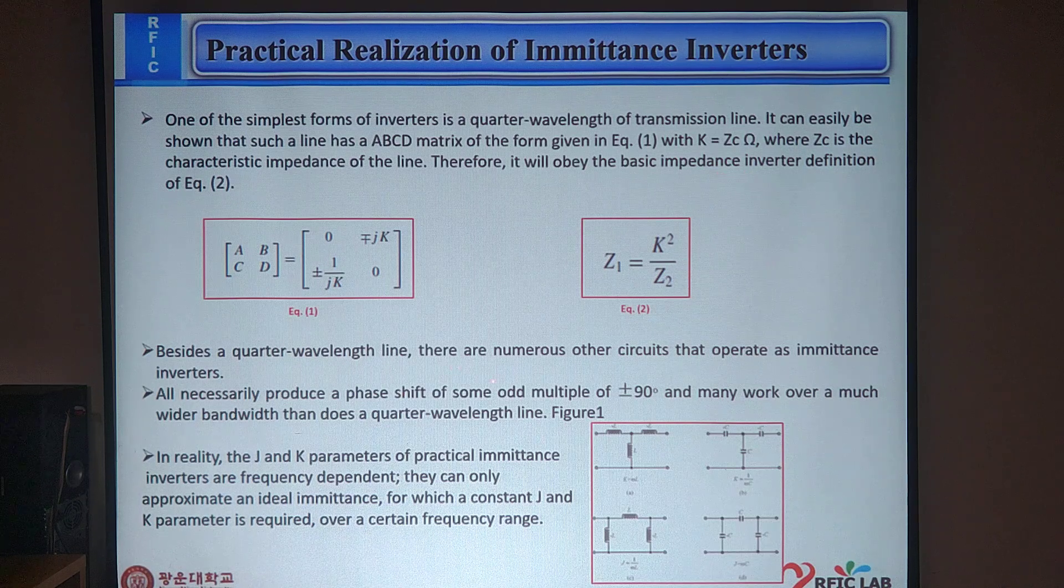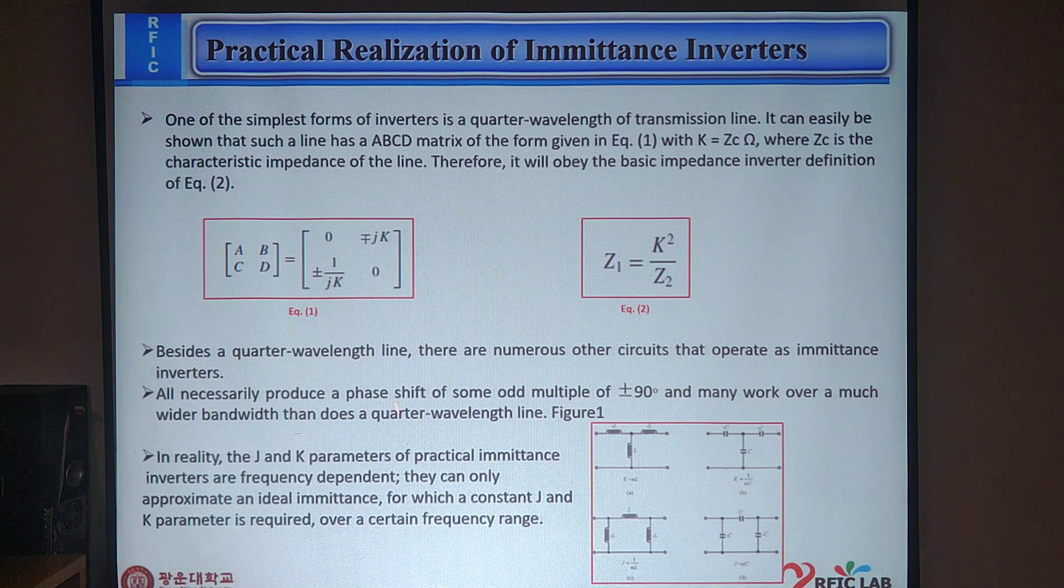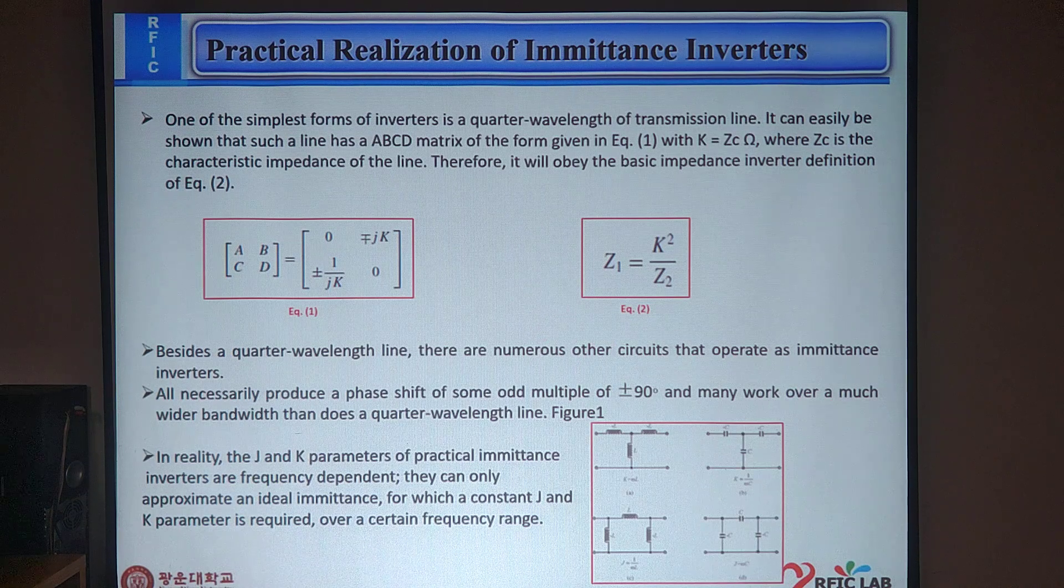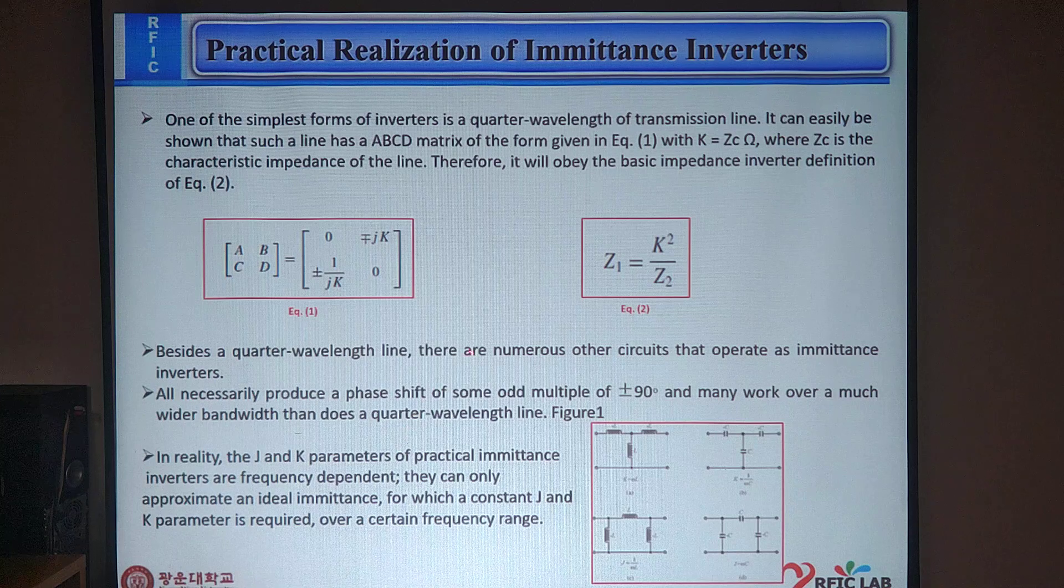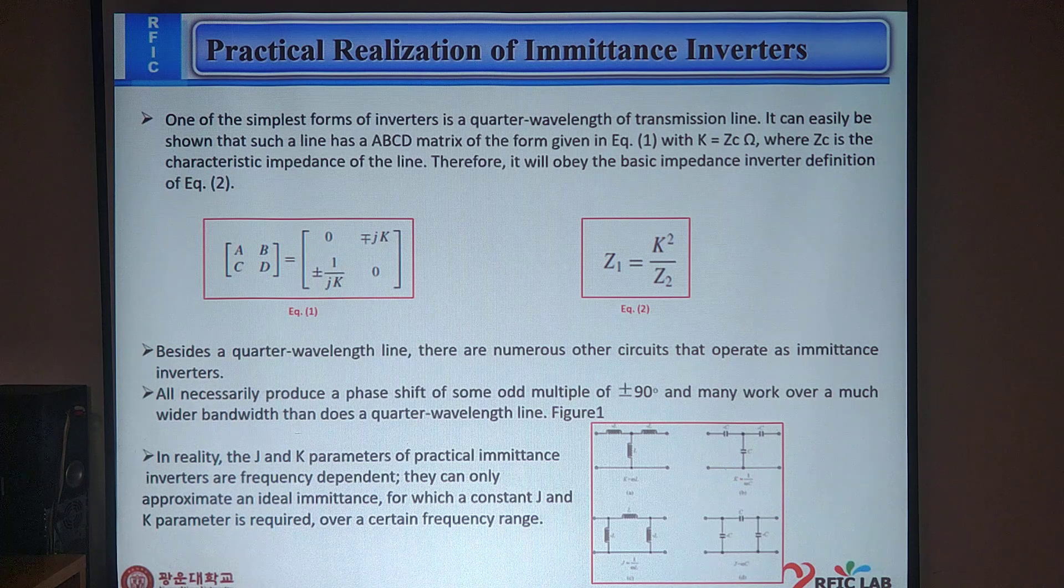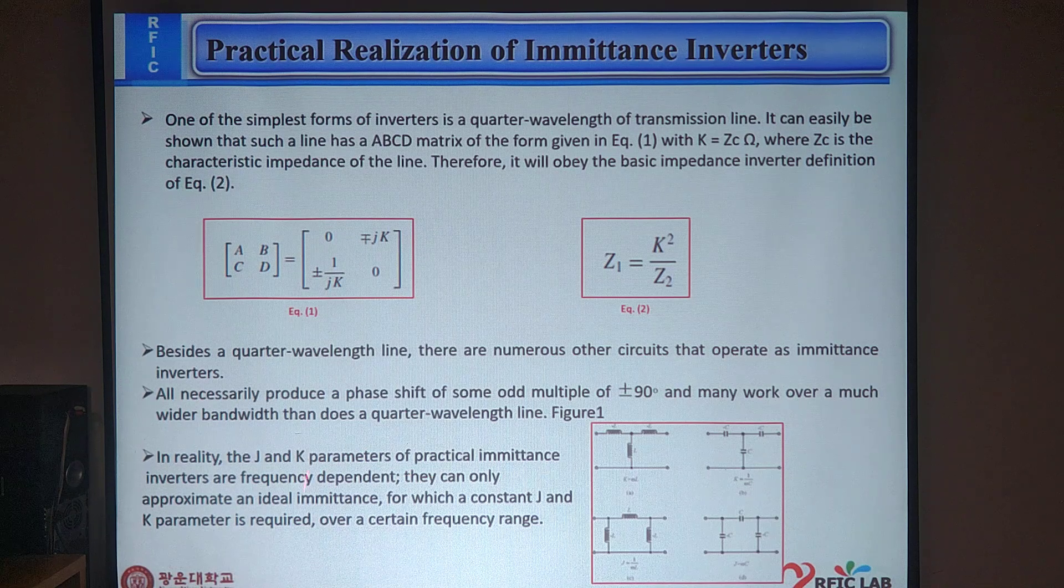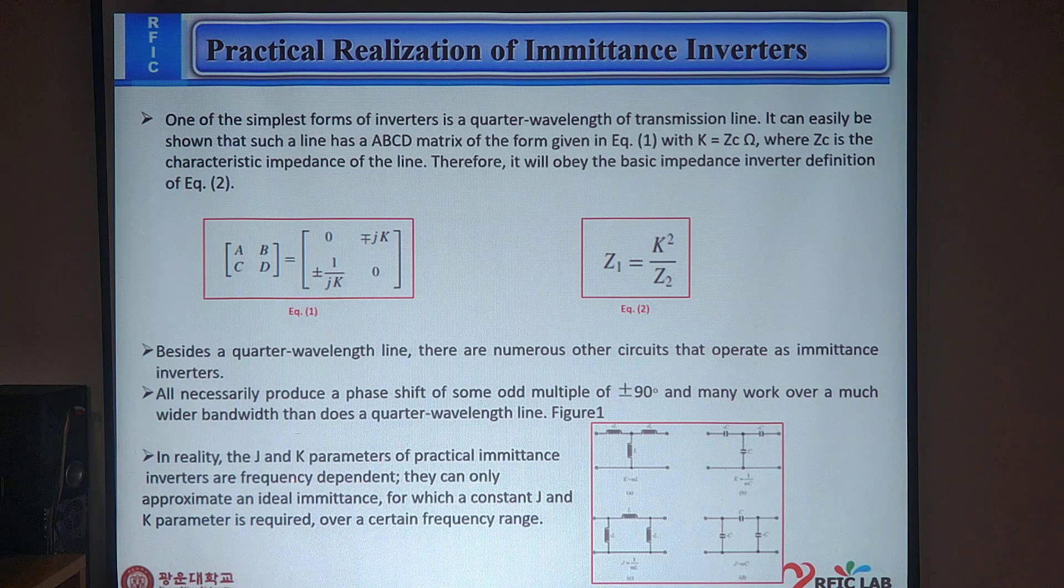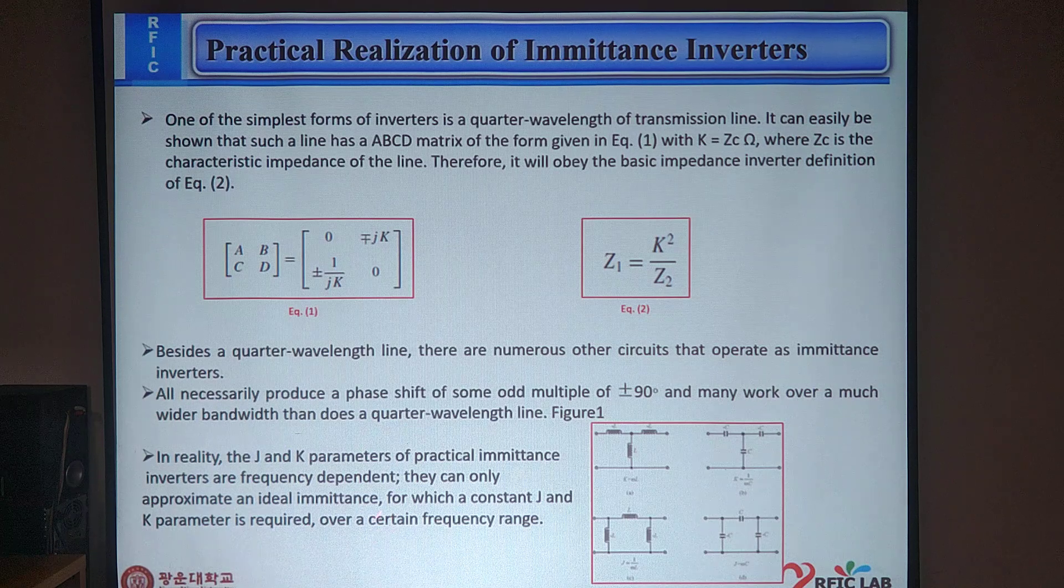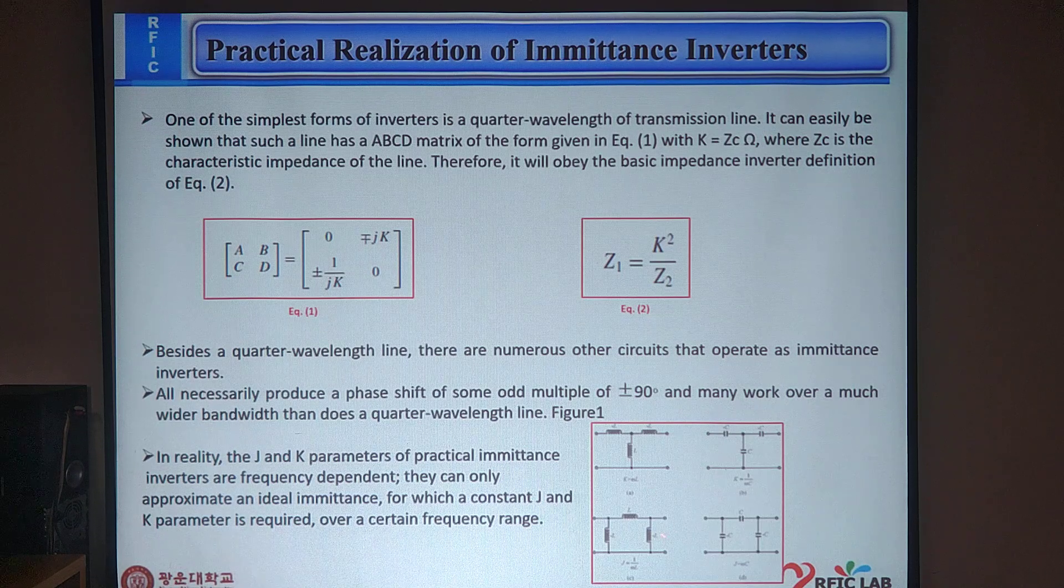Besides a quarter wavelength line, there are numerous other circuits that operate as imittance inverters. All necessarily produce a phase shift of some odd multiple plus or minus 90 degrees, with much wider bandwidth than a quarter wavelength, as shown in Figure 1. Here, we can see the lumped element imittance inverter. In reality, the J and K parameters of this practical imittance inverter are frequency dependent. They can only approximate an ideal imittance for which a constant J and K parameter is required over a certain frequency range.